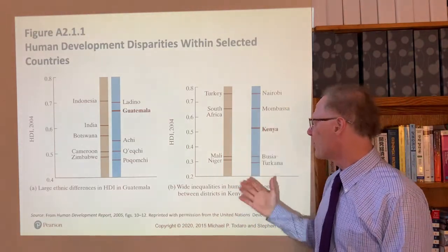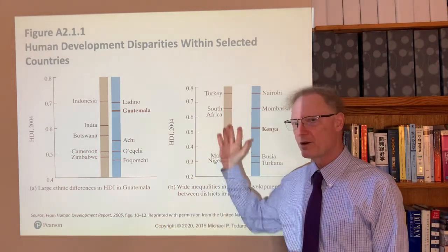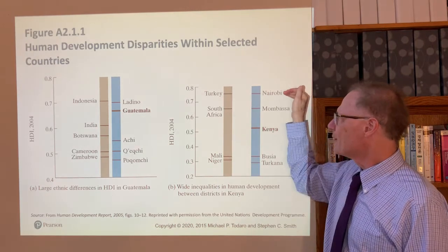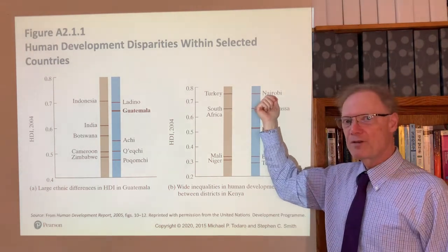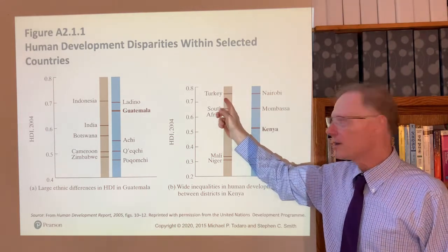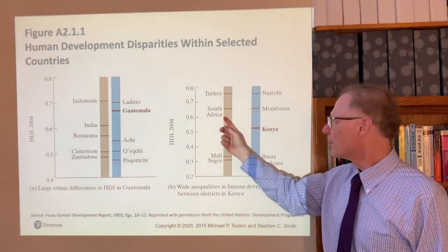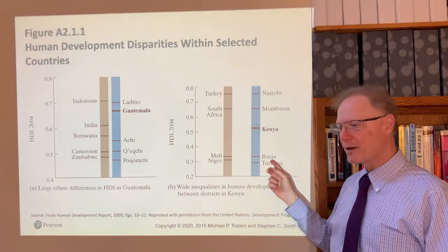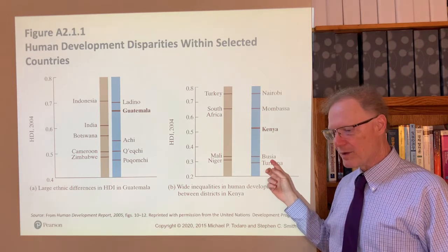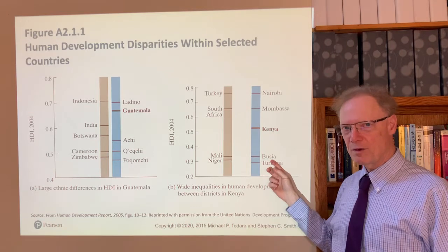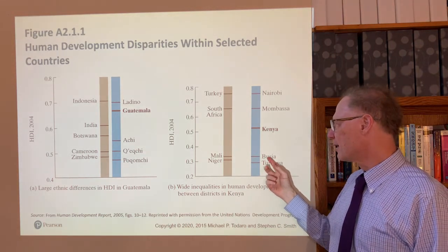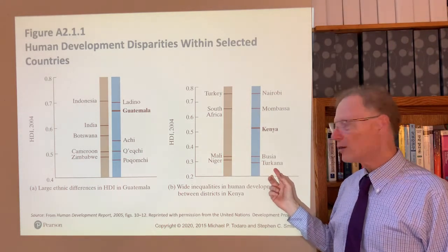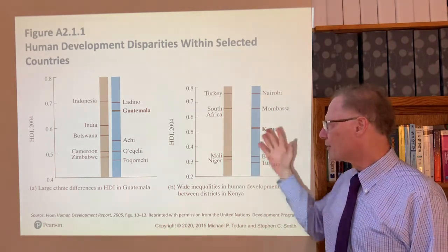In addition to ethnic groups, you can also look at regions within a country. In Kenya, Nairobi — the capital — is on average around where Turkey is, though there's huge inequality within the city. The port city of Mombasa is around where South Africa is. But Boussia district, to the west bordering Uganda, is on the order of Mali. Turkana, to the north, is even below Niger in terms of its Human Development Index. So we can do this kind of analysis.